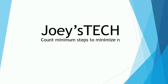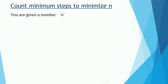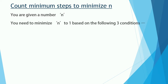Hi, welcome to Joystick. In this video we are going to solve the problem of Count Minimum Steps to Minimize N using dynamic programming. Let's see what the problem statement has to say. You are given a number represented by a variable N, and you need to minimize this number N to 1. You are given three conditions based on which you can do it.